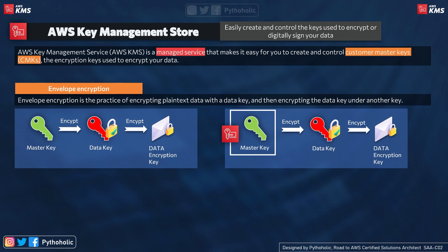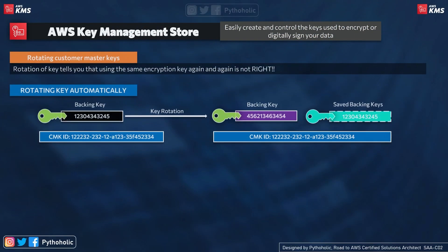This is one of the best features of KMS — it gives you the flexibility to take a key, make it a master, and use it as your Customer Master Key to create data keys and encrypt your data. You take the master key, encrypt the data key to create a data encryption key, and use the CMK to encrypt the data key and produce an encrypted data key. That is envelope encryption.